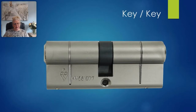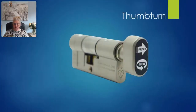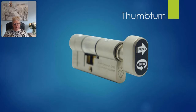A key-key cylinder means that a key can be used both internally and externally to lock and unlock the door. A thumb-turn cylinder has a key externally for operation but a knob or thumb-turn internally. These are commonly used on doors fitted to apartments or on fire doors, as they allow the occupant easy and quick access out in the event of an emergency.